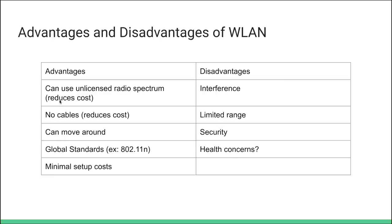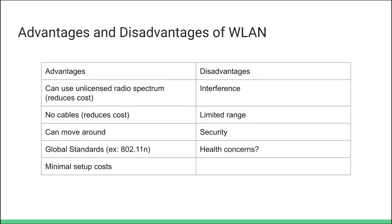Advantages of Wi-Fi include not needing to license the radio spectrum, no cables so you can move around, global standards so you can connect anywhere, and easy setup. Disadvantages include interference — like a refrigerator blocking your router — limited range of roughly 20 meters, security risks since anyone nearby could attempt to hack into your wireless network, and some health concerns related to wireless radiation.